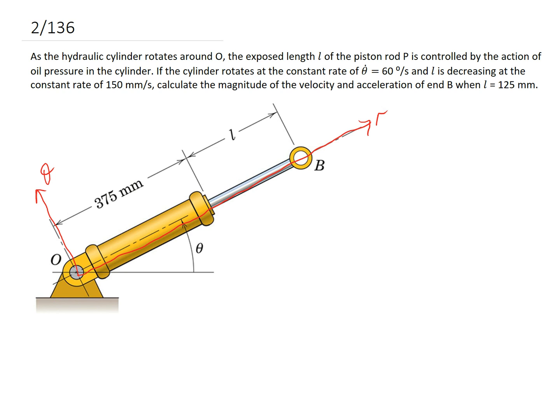Alright, so the next thing we need to do is write out all the different variables that are going to go into the velocity and acceleration expressions. And in the polar form, they are theta, theta dot, theta double dot, and then R, R dot, R double dot.